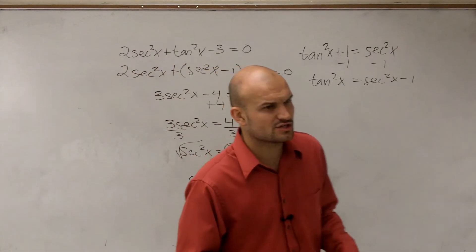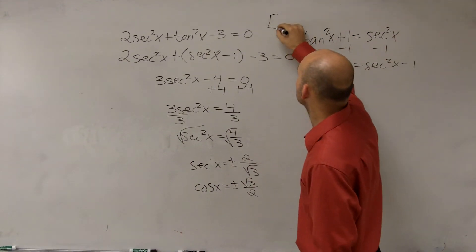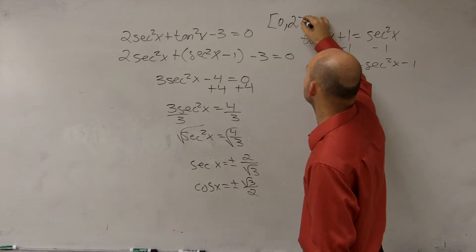And did this have a constraint? This had constraints on it, right? This is the last homework. So we need to make sure we solve on the constraint of 0 and 2 pi.